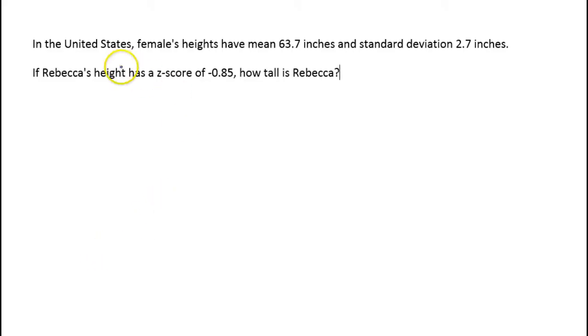Here's an example. In the United States, females' heights have a mean of 63.7 inches and a standard deviation of 2.7 inches. If Rebecca's height has a z-score of negative 0.85, how tall is Rebecca?